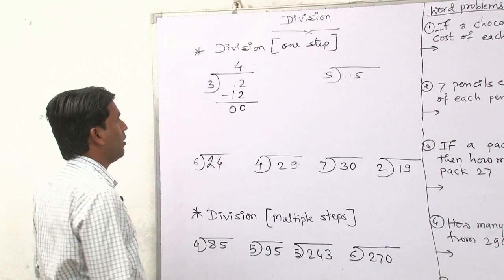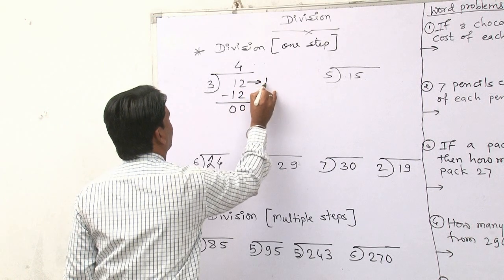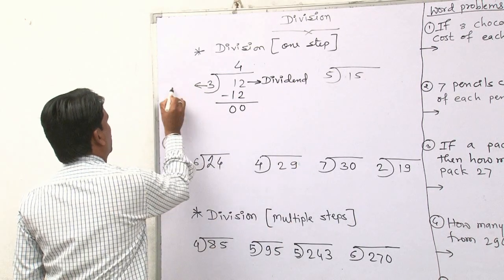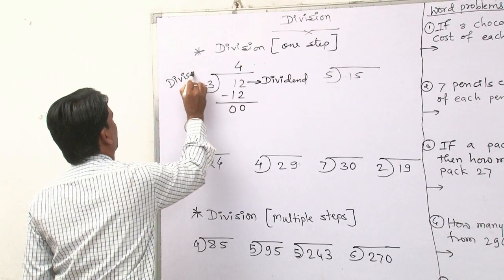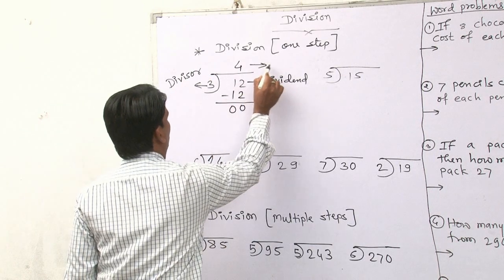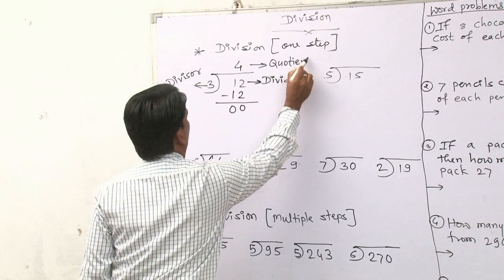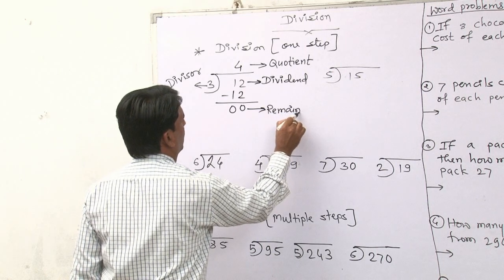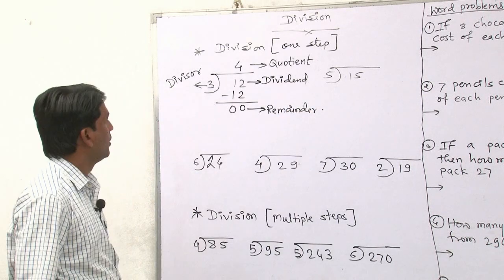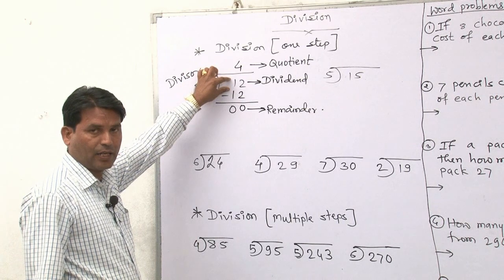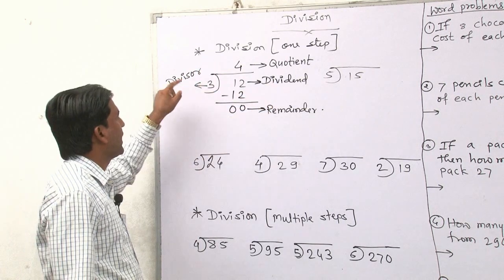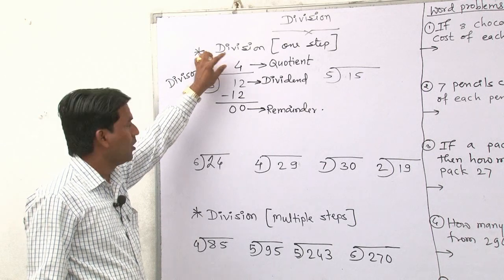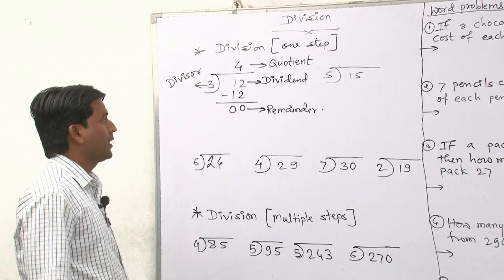Friends, in the given example, this 12 is known as the dividend. This 3 is known as the divisor. This 4 is known as the quotient. And this is known as the remainder. The number we divide is the dividend. The number we divide by is the divisor. The answer we get is the quotient. And what is left at the bottom is known as the remainder.